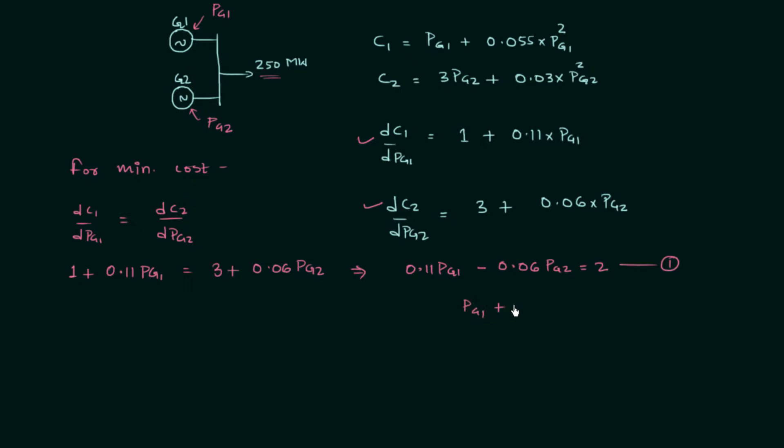This is the second equation. The next step is to solve the two equations. We have two equations and there are two variables, so we can easily find out PG1 and PG2. I am not going to solve it. This is homework for you.